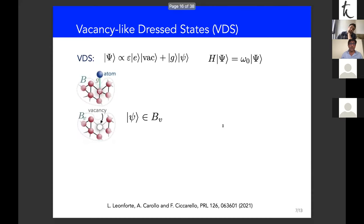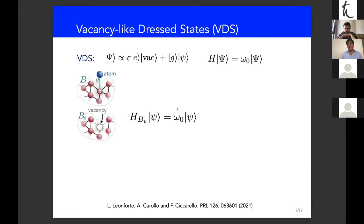It is convenient to define a bath BV — the same bath as before but with the cavity directly coupled to the atom replaced by a vacancy. The photonic wave function of the VDS fully lives in BV and is even an eigenstate of the free Hamiltonian of BV with the same energy as the atom. When does such a state form? Through another one-line proof from the Schrödinger equation, one finds that if this eigenstate of BV exists, the VDS will always exist as well.